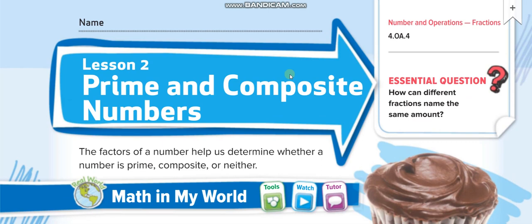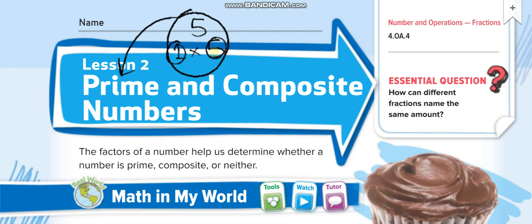What are prime and composite numbers? Any number which has just one factor pair — not factor, factor pair — for example, five has only one factor pair: one times five. It has only two factors: one and five. Any number like this with just one factor pair and only two factors is known as a prime number.